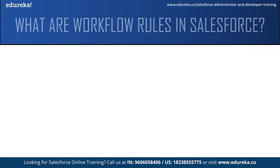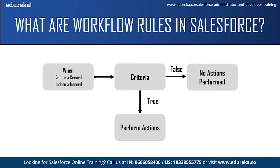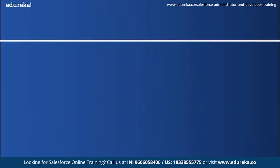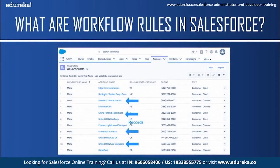Each workflow rule consists of two main things: criteria and actions. You can set a criteria when a record has been created or when it has been updated, and these records are based on a single object. Objects in Salesforce are like leads, accounts, opportunities, contacts, or any other custom object. Fields are basically the columns in a table that tell us about what is stored in the records, and records are the rows or any entry in the table — basically the information of an individual.